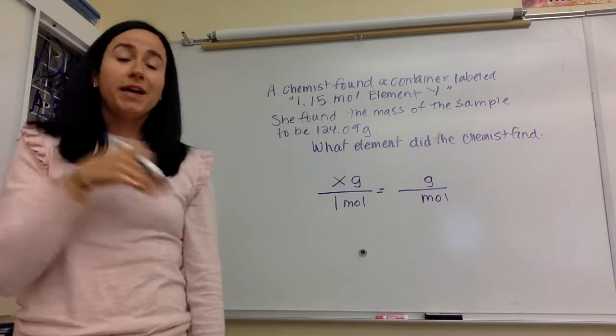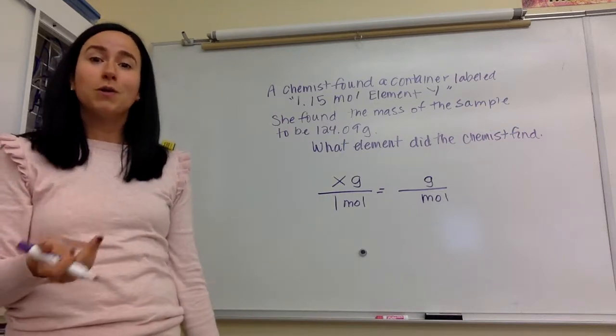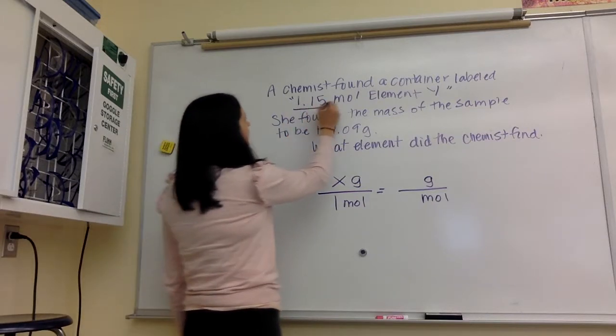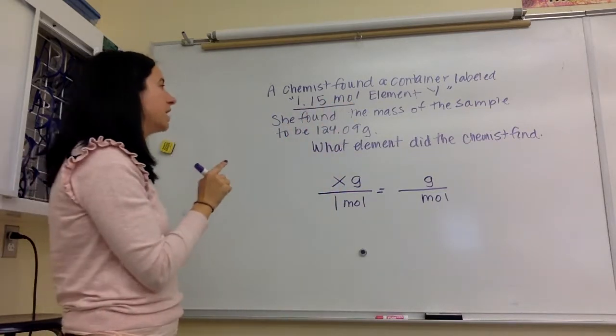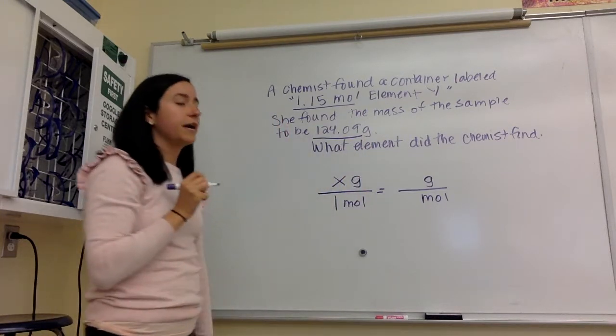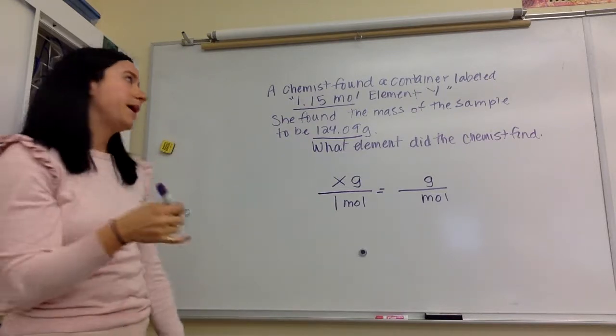Well, the next thing I'm going to do is plug in what I know, and I already plugged in what I don't know, because I don't know the molar mass. So let's take a look at the problem. I know that my sample has a mass of, sorry, has 1.15 moles, and I know it has a mass of 124.09 grams. So we're just going to plug those numbers into our proportion so that the units match.